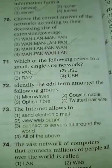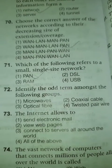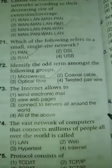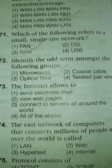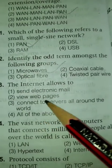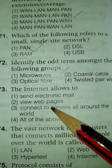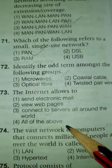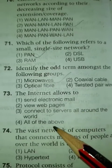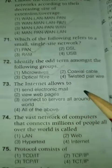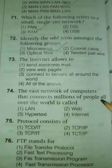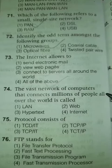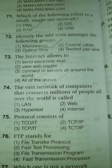Identify the odd one out among the following group: microwave. The internet allows users to send electronic mails, view web pages, and connect servers all around the world. The correct option is: all of the above. The vast network of computers that connects millions of people all over the world is called the internet.